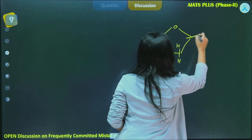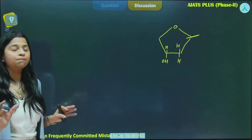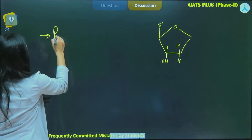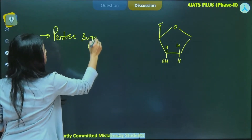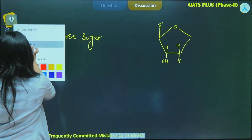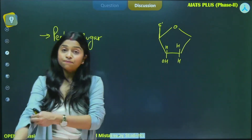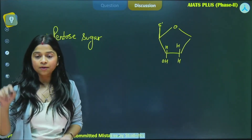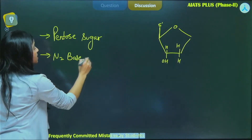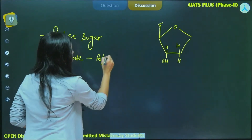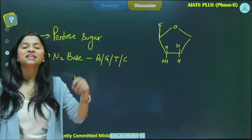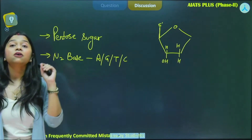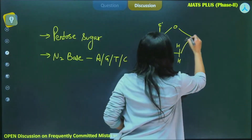This is the first position — our first component, the pentose sugar. This is its fifth carbon over here, and this is the first carbon. Now the second component is the nitrogenous base. Its positioning will be on the first carbon of the pentose sugar. This base can be adenine, guanine, thymine, or cytosine — not uracil, because here we are speaking of DNA.